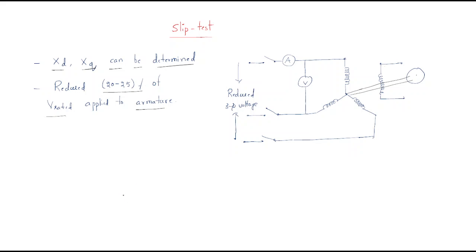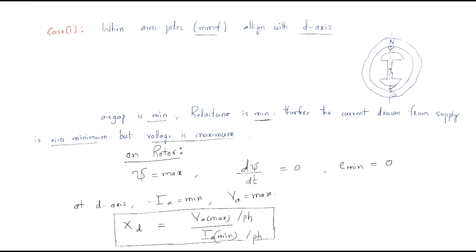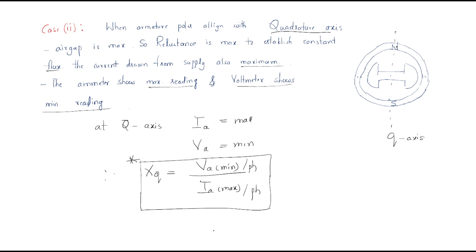In the last session we discussed the slip test, in which we find the direct axis reactance Xd, that is Vmax by Ia minimum, and the quadrature axis reactance Xq, that equals Va minimum by Ia max.